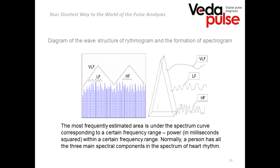We divide our curve into different curves and get the area of each spectrum curve, which correlates to a particular frequency range. We measure the power of the spectrum in ms². So what does frequency mean? It is the quantity of impulses per second that the heart receives from regulatory structures — from parasympathetic, sympathetic, and neurohumoral influence.